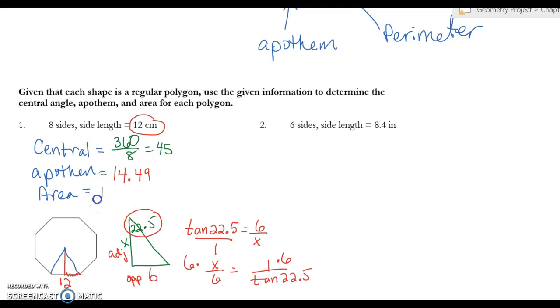And then now I just need to find my area. So my area is 1/2 the apothem, 14.49, times my perimeter. Well, I have 8 sides and they're 12 each, so it's 8 times 12. So I'm going to plug that in the calculator: 1/2 times 14.49 times 8 times 12, and that gives me 695.52 centimeters squared.